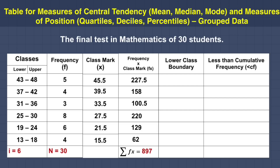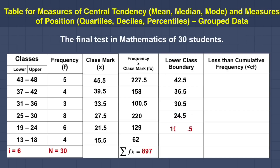Next, let us complete the lower class boundary, which is usually used in solving median, mode, and measures of position. To get the lower class boundary, subtract the lower value by 0.5. So: 43 minus 0.5 equals 42.5; 37 minus 0.5 equals 36.5; 31 minus 0.5 equals 30.5; 25 minus 0.5 equals 24.5; 19 minus 0.5 equals 18.5; and 13 minus 0.5 equals 12.5.